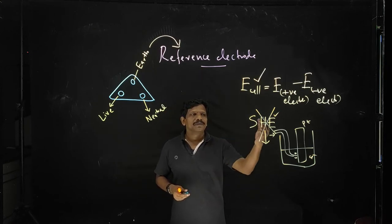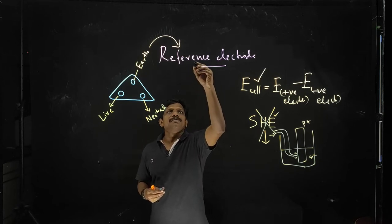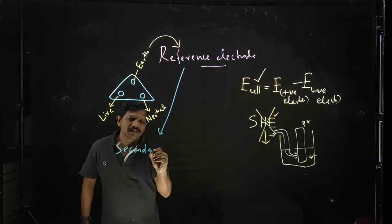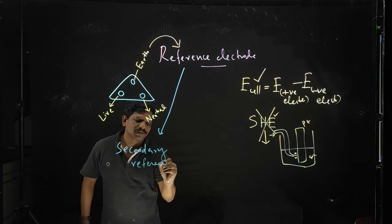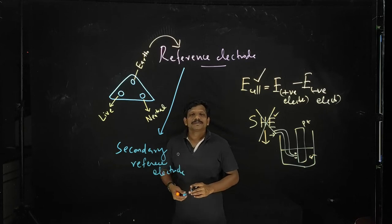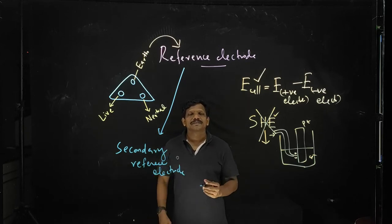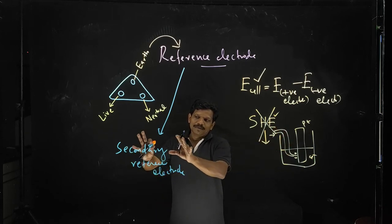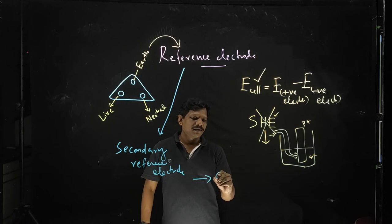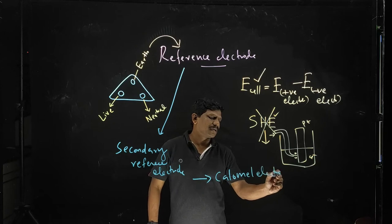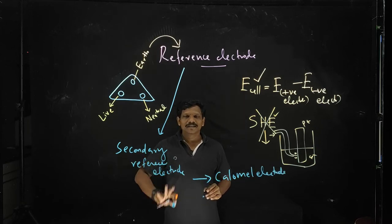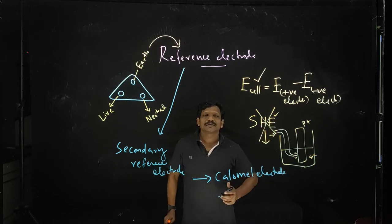That is why we are using a special type of reference electrode called secondary reference electrodes. An example of a secondary reference electrode is the calomel electrode. Calomel electrode is a very convenient reference electrode. Instead of using a standard hydrogen electrode, you can use a calomel electrode.